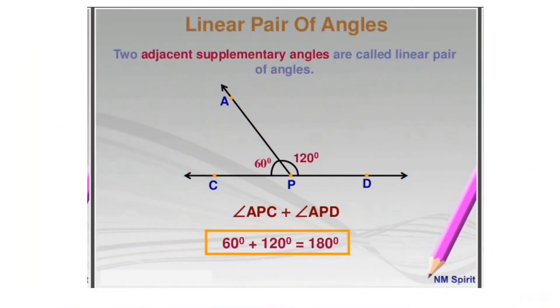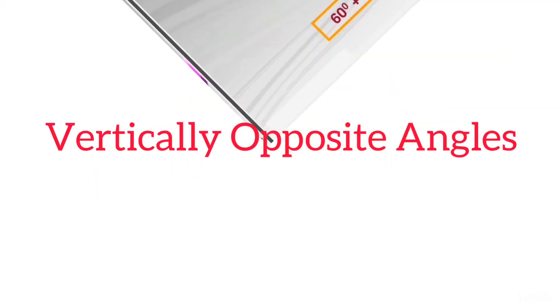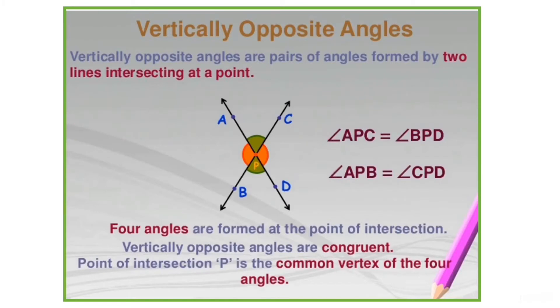Next is linear pair of angles. If the sum of two adjacent angles is 180 degrees, or you can say that two adjacent supplementary angles are called linear pair of angles. You can see here 60 degrees and 120 degrees form a linear pair. Let's discuss the next pair of angles.